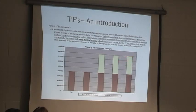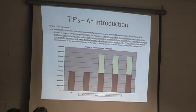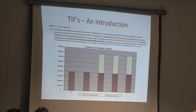One key element: establishment of a TIF does not reduce property tax revenues available to the overlapping taxing bodies. Property taxes collected on properties in the TIF, when it's designated, continue to be distributed to all taxing districts, including schools — in the same manner as if the TIF did not exist. So that continues during the entire life of the TIF.